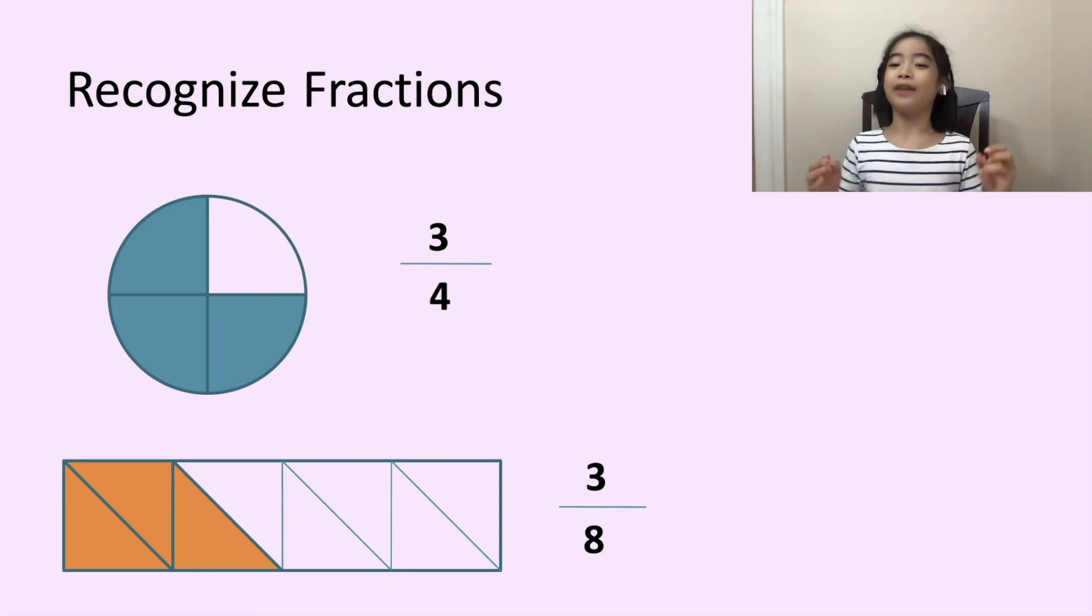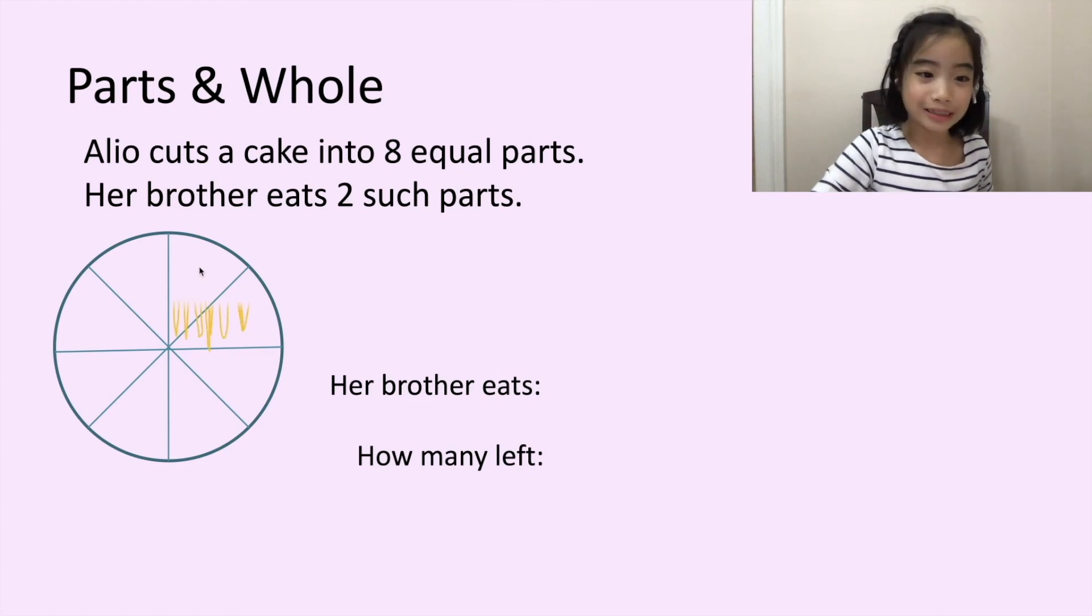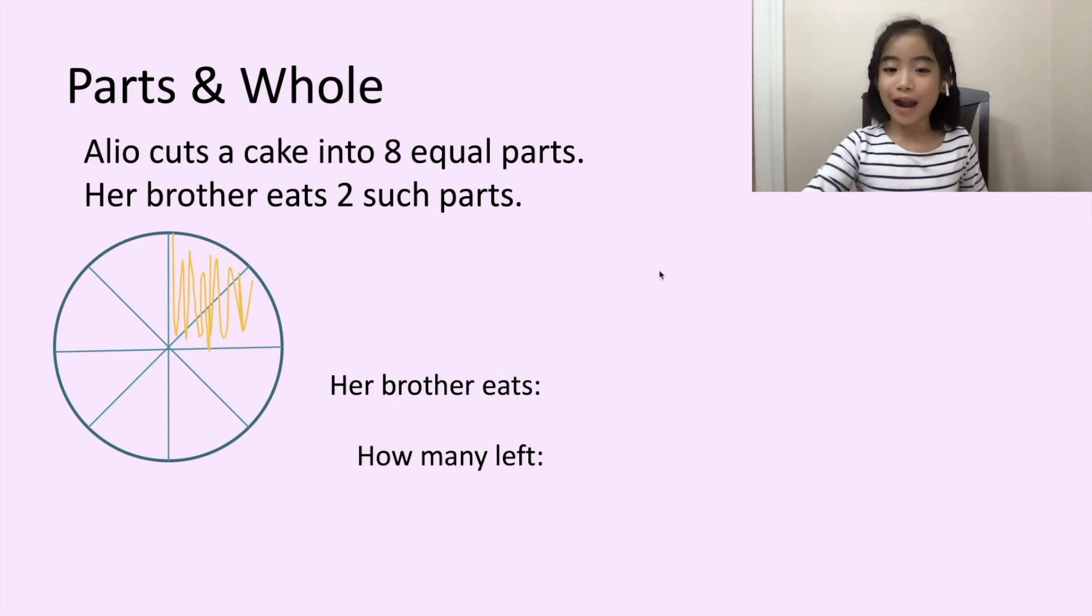Now, let's look at a word problem. We know that fractions are parts and whole. What that means is a whole divided into equal parts. The word problem is, Alio cut a cake into eight equal parts. Her brother eats two such parts. So, here is the cake. We know that her brother eats two such parts. So, we color in two parts. The fraction is two eighths. Or her brother eats two eighths of a cake.